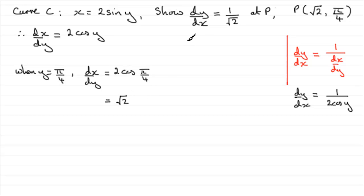And then all we need to do is just apply this principle and we can therefore see that dy by dx will equal the reciprocal of this, that is 1 over the square root of 2.